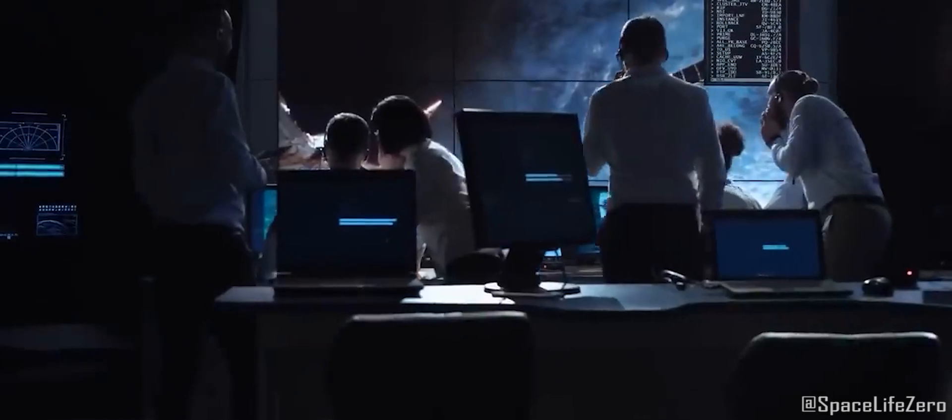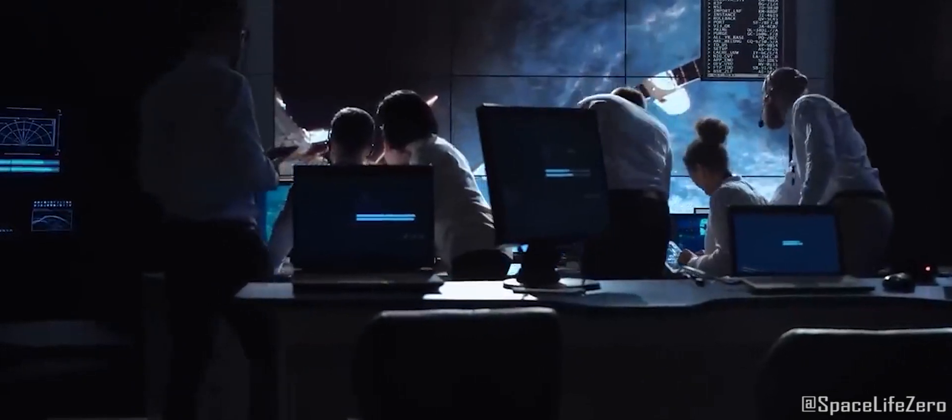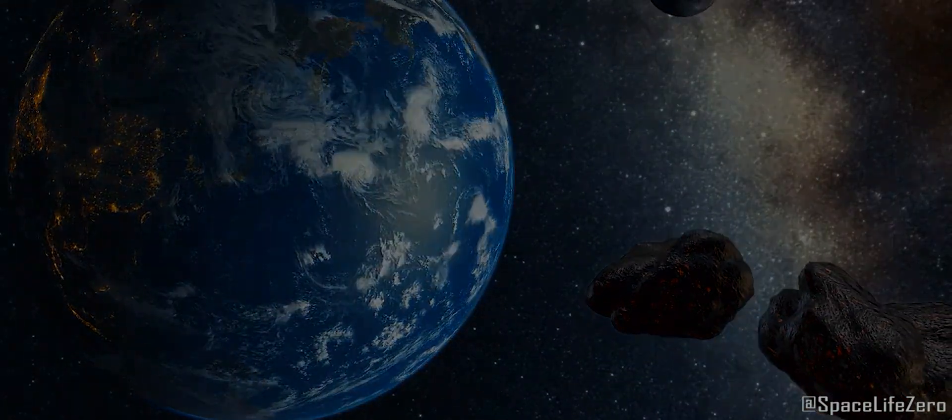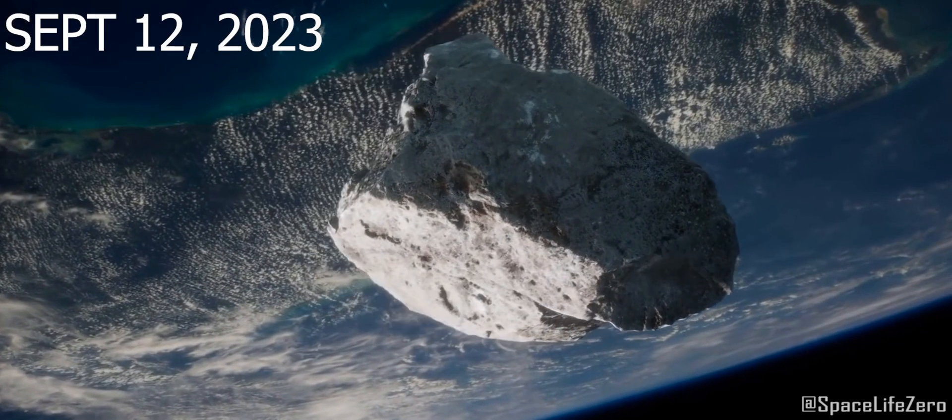The researchers at NASA's Jet Propulsion Laboratory have tracked two asteroids with diameter less than 25 meters each, approaching close to our planet on September 12, 2023.